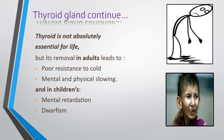The thyroid gland is not absolutely essential for life, but its removal in an adult leads to poor resistance to cold, and mental and physical slowness. While in children, it causes mental retardation and dwarfism.